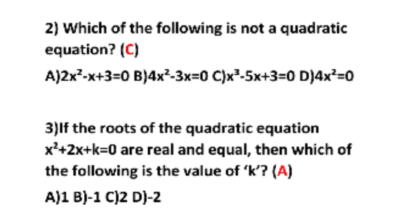You can easily find out: A is 2x square minus x plus 3 equal to 0, degree is 2 — quadratic equation. B is 4x square minus 3x equal to 0, you find x square — also a quadratic equation. C is x cube minus 5x plus 3 equal to 0; you find x cube, so its degree is 3 — not a quadratic equation. D is 4x square equal to 0; you find x square term — also a quadratic equation. So A, B and D are quadratic equations. The leftover one, x cube minus 5x plus 3 equal to 0, whose degree is not 2, is the answer for the second question. C is the answer.